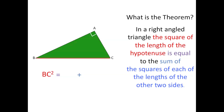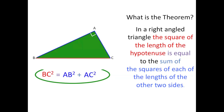Let's read this carefully. It says the square of each of the lengths of the other two sides. The lengths of the other two sides are represented by AB and AC. And again, we're squaring each of these sides, so we end up with AB squared and AC squared. Thus, the theorem basically means that BC squared is equal to AB squared plus AC squared.